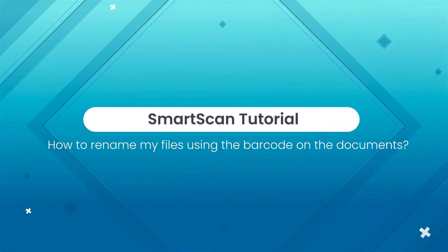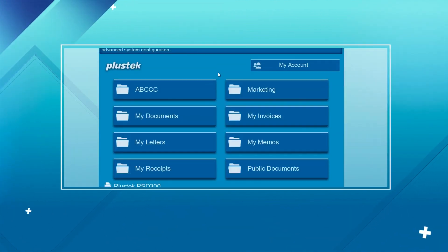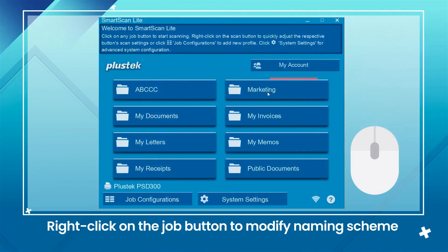How to rename my files using the barcode on the documents. When you add SmartScanLite interface, right-click on the job button to modify the naming scheme.